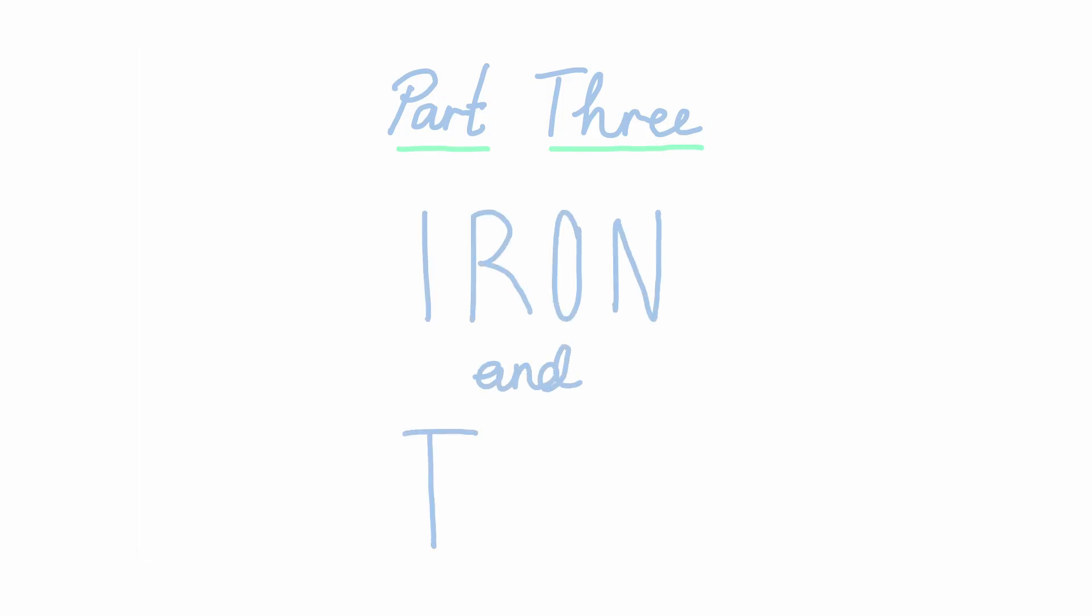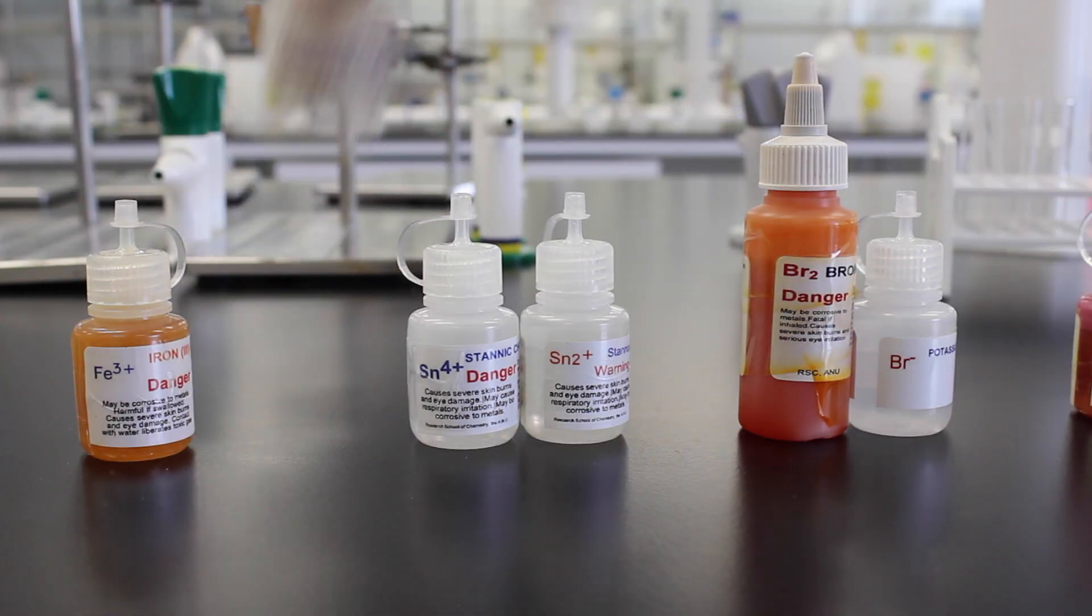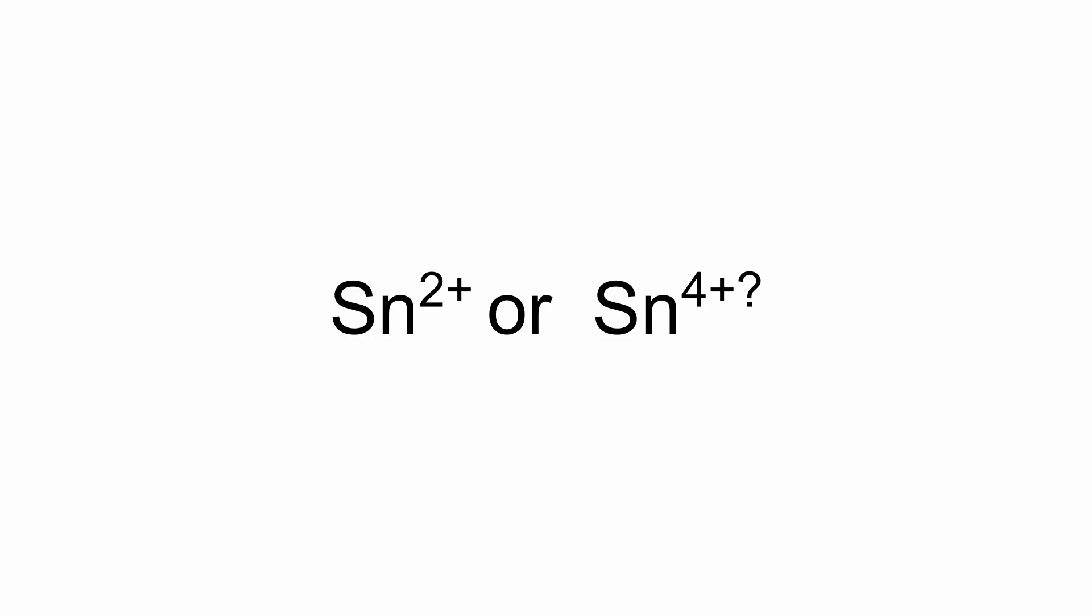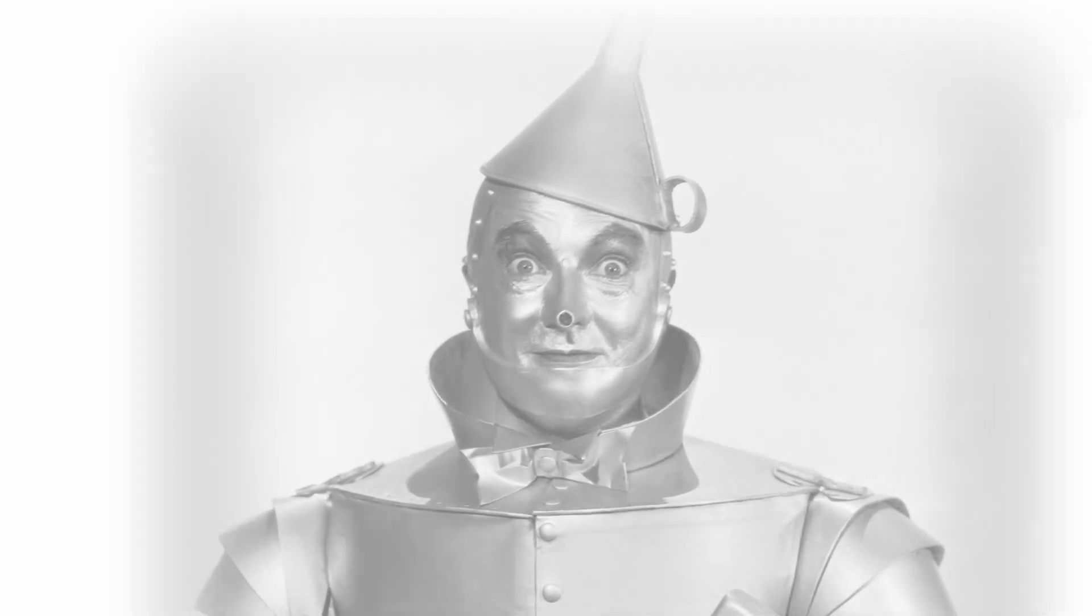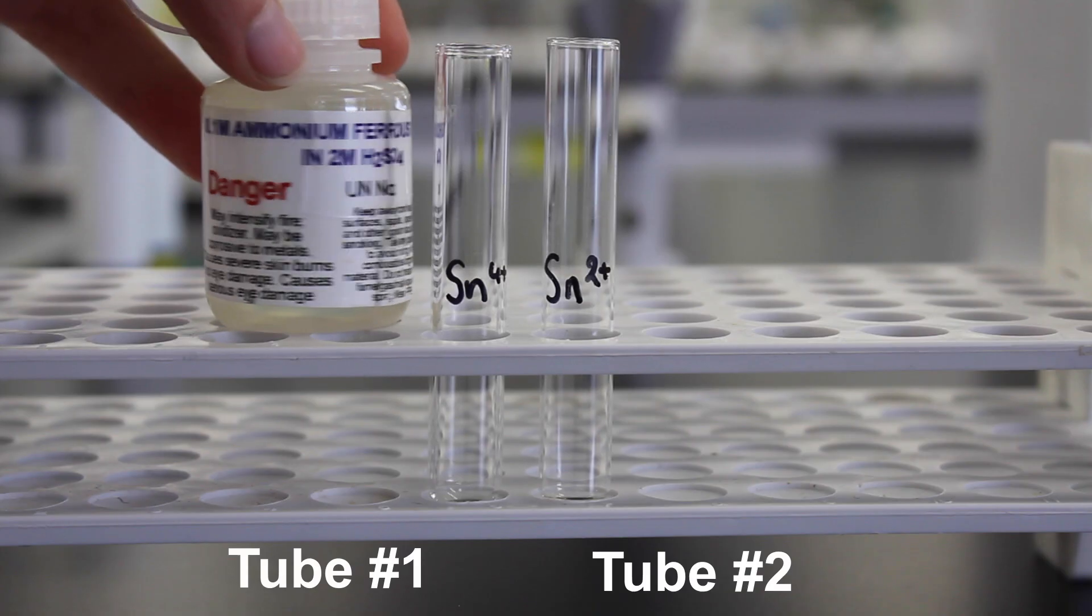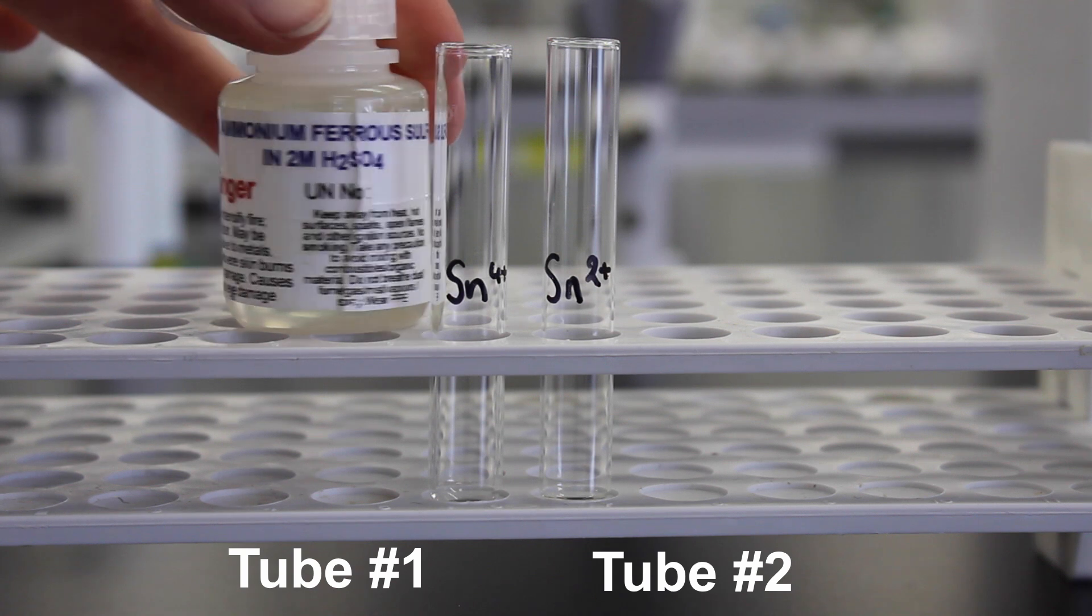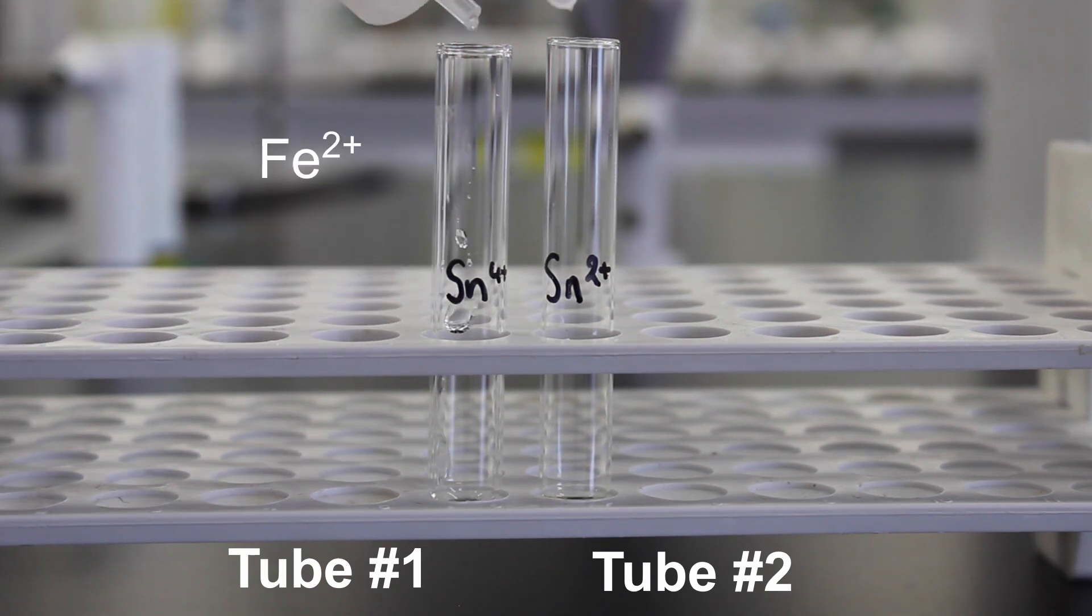Now that we've investigated the relationship between iron and bromine couples, we will now investigate the relationship between iron and tin. Our first experiment will involve iron 2+. Have a look at your notes and think about which tin species would be appropriate. That's right, tin 4+, which means that we will also be comparing iron 3+ and tin 2+.